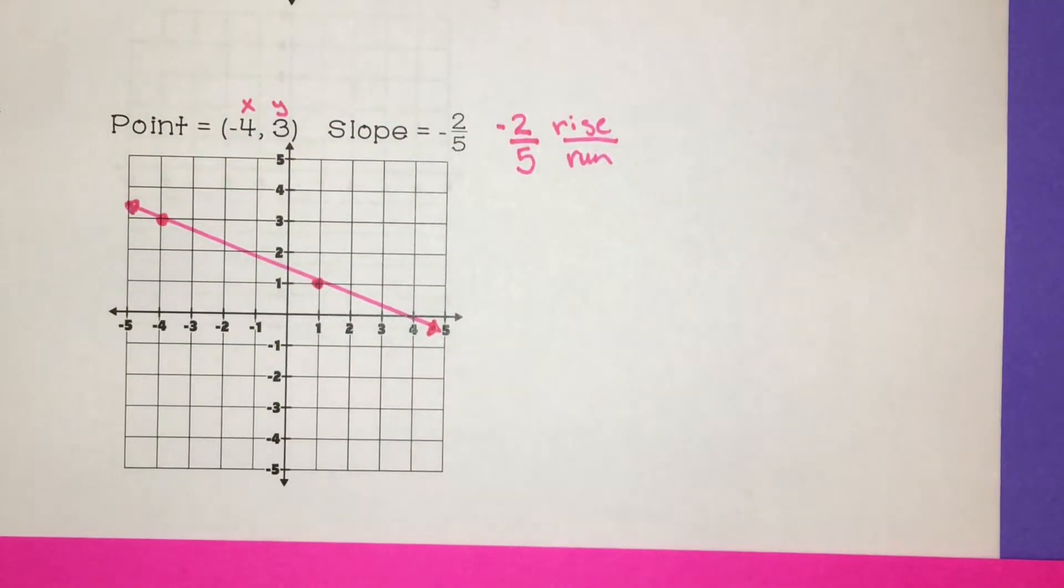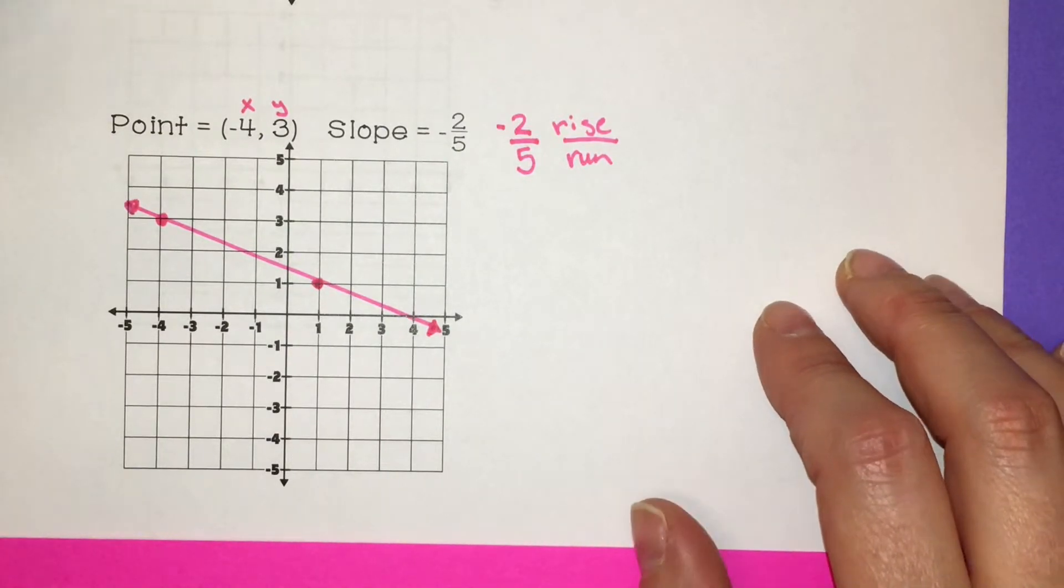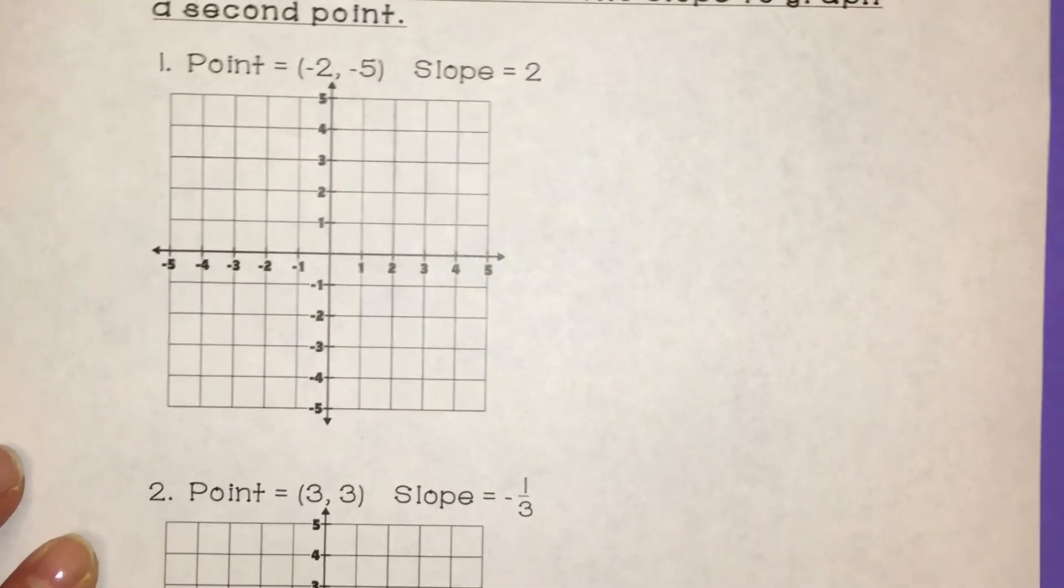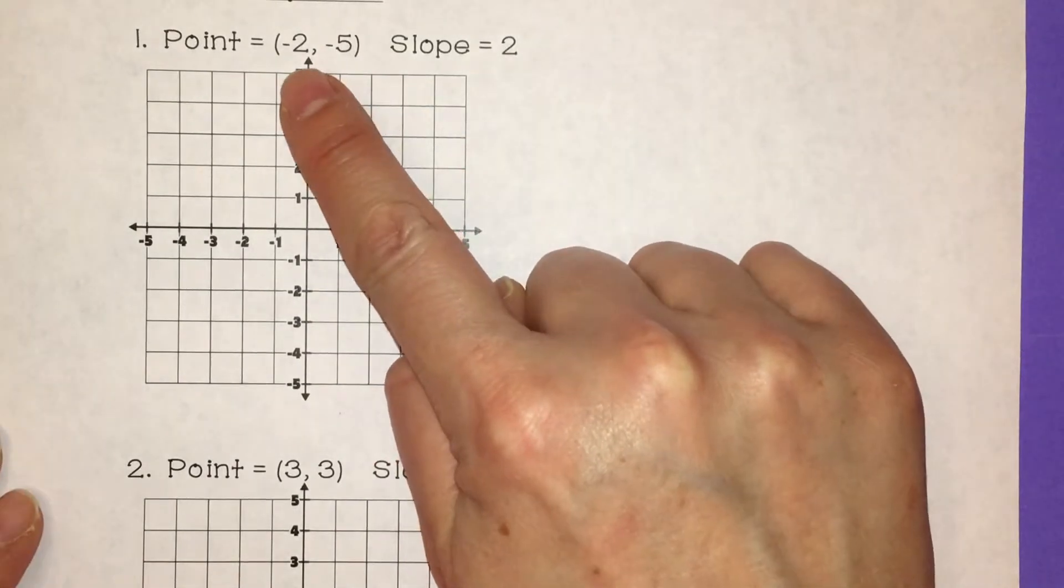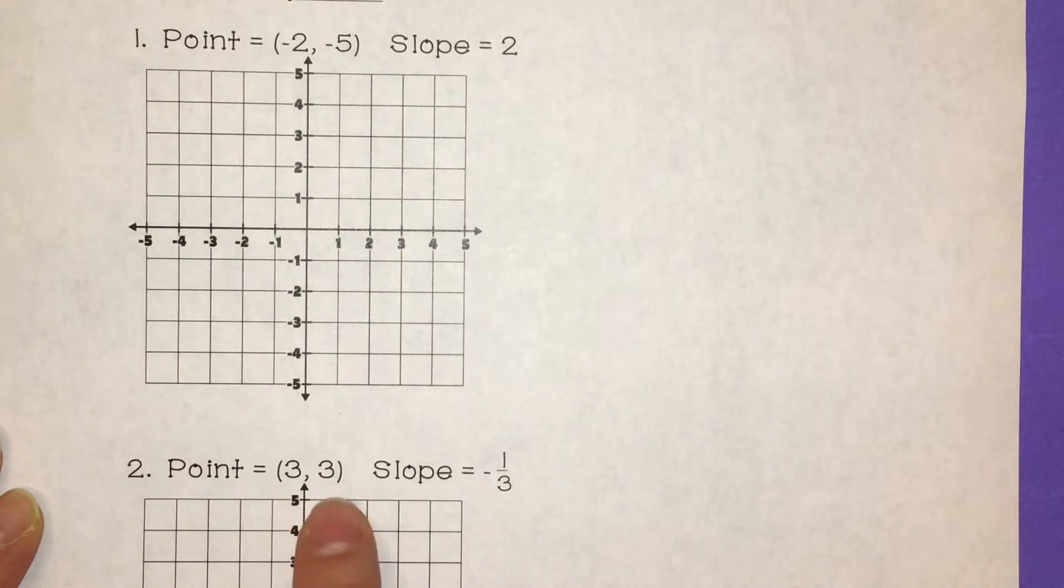Okay, so it's fairly simple. Just start out by graphing your point. And then from that spot, you're going to use a slope in rise over run form to create a second point. Okay, so here are two for you to do. One with point (-2, -5) and slope of 2. The other one with a point of (3, 3) and slope of -1/3. Go ahead and graph them, and I will go through the answers with you when you're ready.